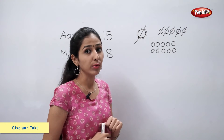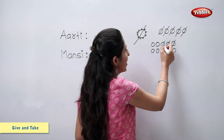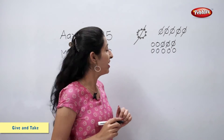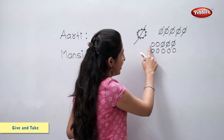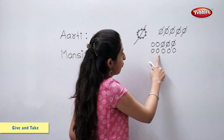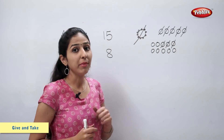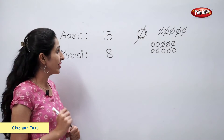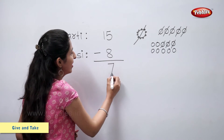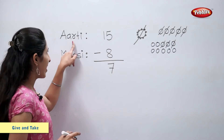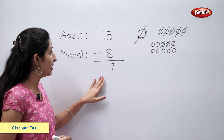So now we have 10 more loose pearls. 1, 2, 3, 4, 5, 6 and 7. So there are 7 pearls left with Aarti. We can also say that 15 minus 8 is equal to 7. So Aarti had 15 pearls, she gave away 8 pearls to Mansi, so now there are 7 pearls left with Aarti.